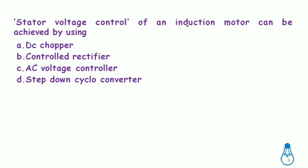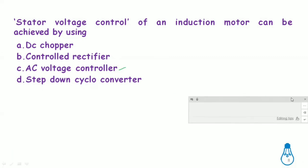Stator voltage control of an induction motor can be achieved by: DC chopper (DC to variable DC — wrong, as input is AC), controlled rectifier (AC to DC — wrong for voltage control), AC voltage controller (fixed AC to variable AC — correct option), or cycloconverter (changes frequency, not voltage). Therefore, stator voltage control is achieved using an AC voltage controller only.